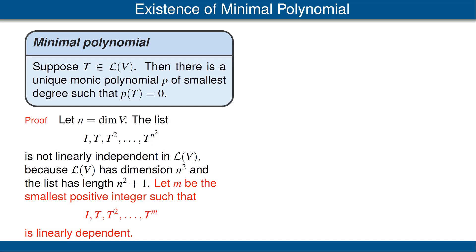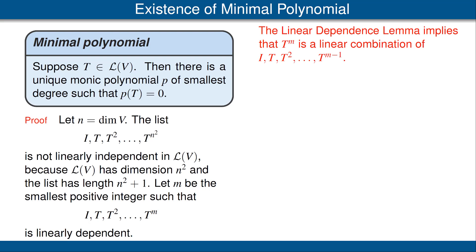Now let m be the smallest positive integer such that the list — the identity operator, T, T squared, up to T to the m-th power — is linearly dependent. The linear dependence lemma implies that one of the operators in this list is a linear combination of the previous operators in the list. It has to be the last one, because otherwise we could have chosen a smaller value for m.